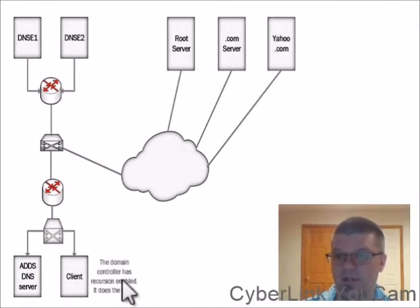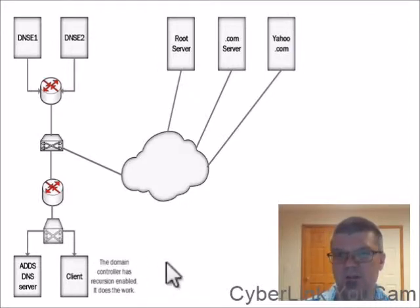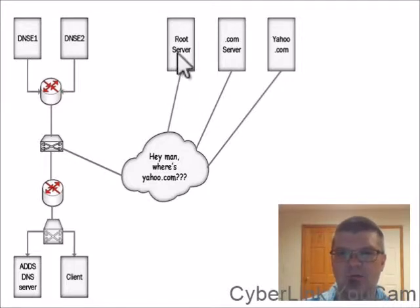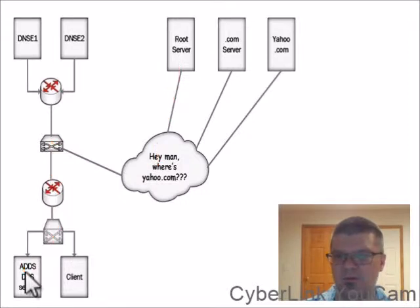The domain controller does all the work. It has recursion turned on and does not send any information back to the client computer until it has the address of the web page requested, which in this instance is yahoo.com. The root server does not know where yahoo.com is. It does, however, know the address of the .com servers and answers the domain controller's query with the IP address of the .com servers.